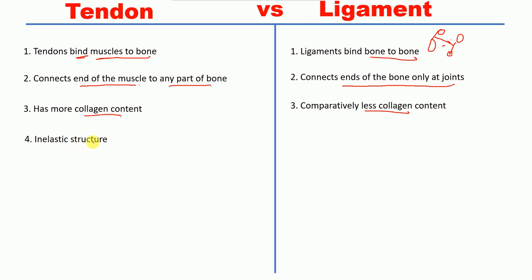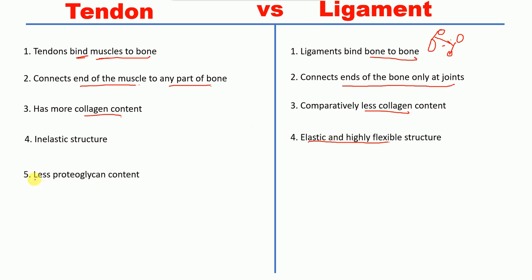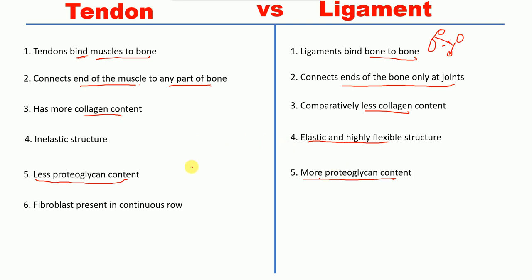Tendons are inelastic in structure, whereas ligaments are elastic and highly flexible in structure. Tendons have less proteoglycan content, whereas ligaments have more proteoglycan content.